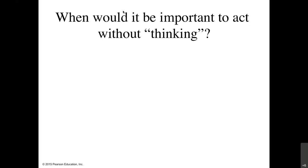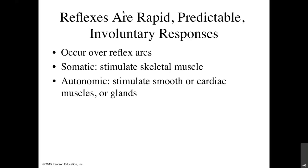For that, we're talking about reflexes. These are things where the decision to move an effector — to contract a skeletal muscle, cardiac muscle, or smooth muscle — happens without conscious thought. These are things that are going to be happening before you realize you're doing it. Reflexes are rapid, predictable, involuntary responses, and they occur over reflex arcs. They're involuntary because they happen at the level of the spinal cord.